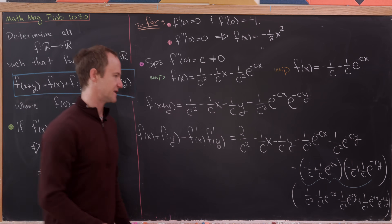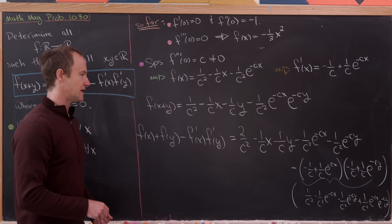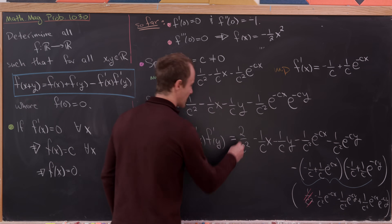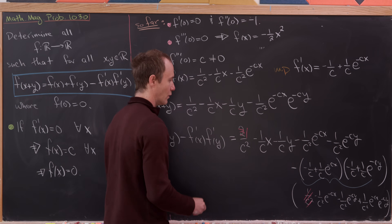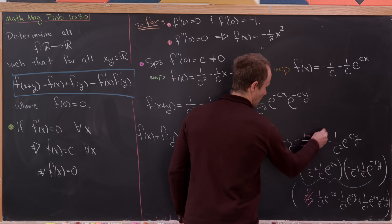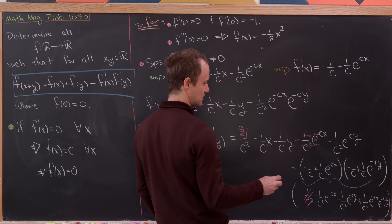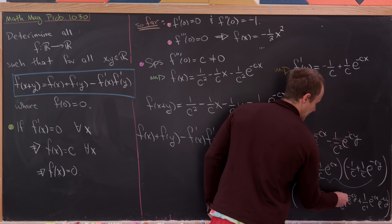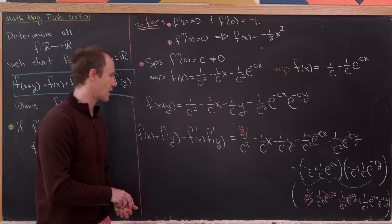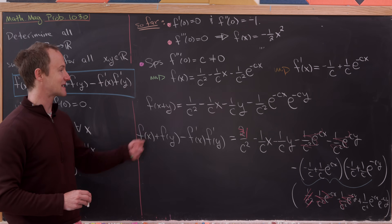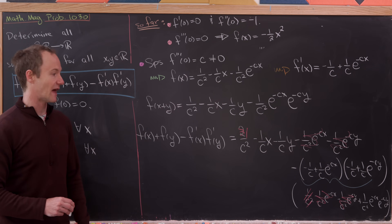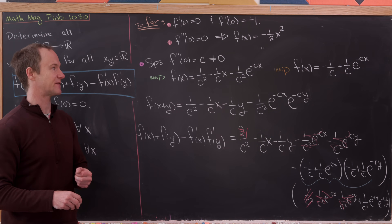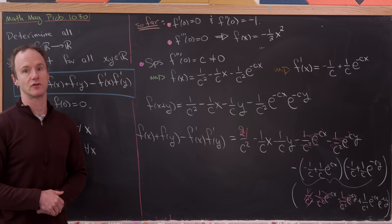After simplification, the 1/c² from f'(x)·f'(y) cancels the extra 1/c² in f(x)+f(y), the e^(-cx) and e^(-cy) terms cancel, and we're left with exactly f(x+y). So our functional differential equation is satisfied and we have found all solutions. Thank you very much.